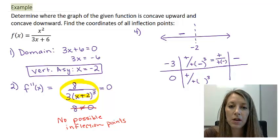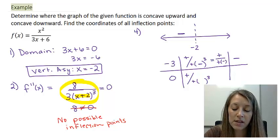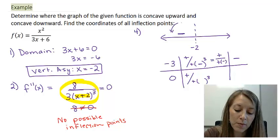Last time with increasing and decreasing, we drew a slope of the graph decreasing. But remember, this time we're doing concavity. So this negative tells us that our graph is concave down. I'm going to draw something that's concave down like a frown.